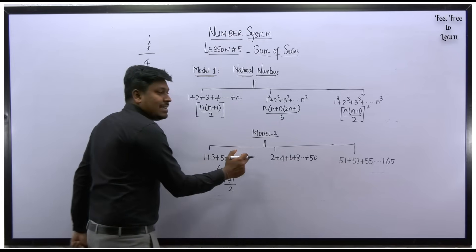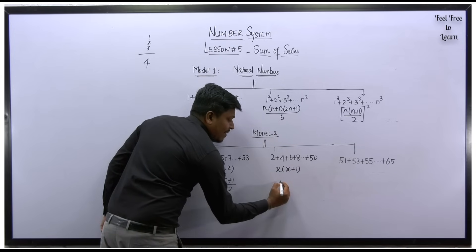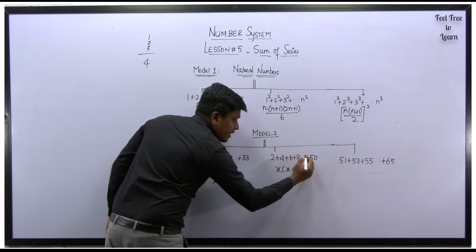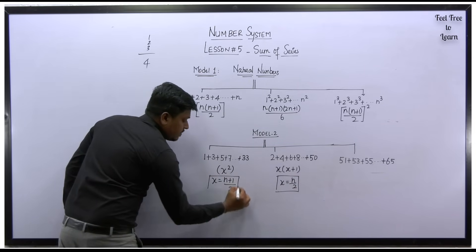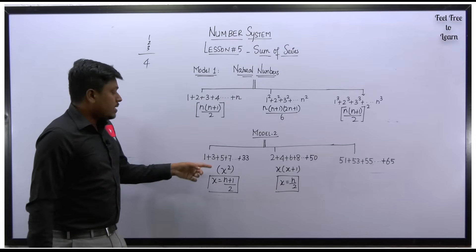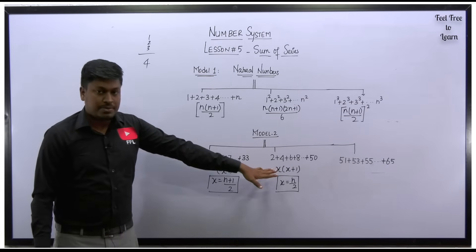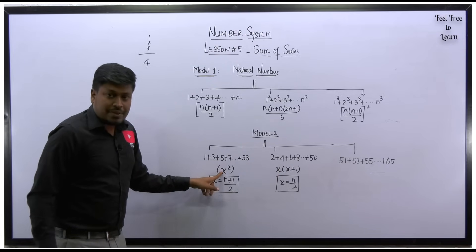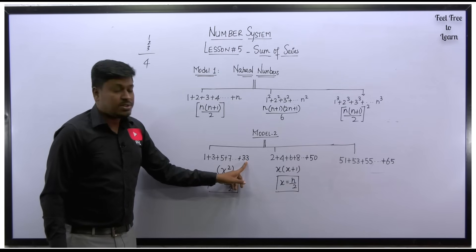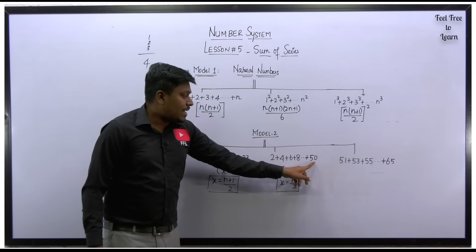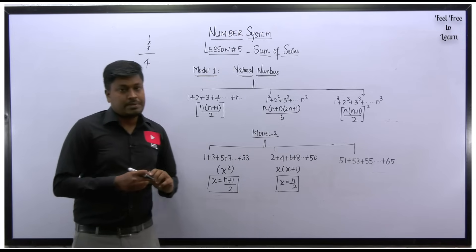For the even series, the formula will be x into x plus 1. The value of x will be n by 2. This is the major difference between odd and even: formula for odd is x square, formula for even is x into x plus 1. We find the value of x, where n is the last digit of the given series.